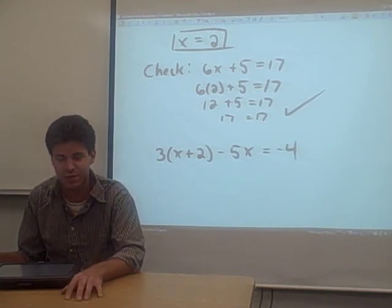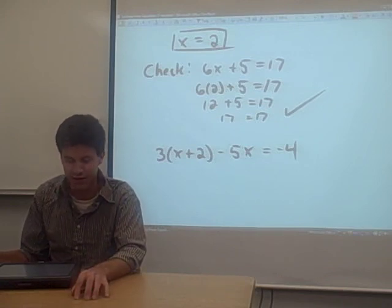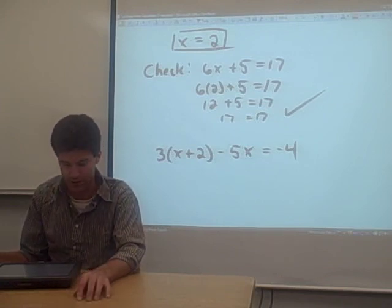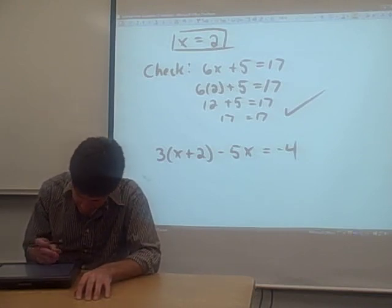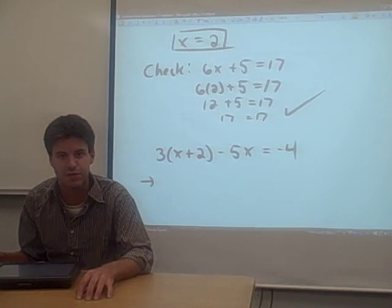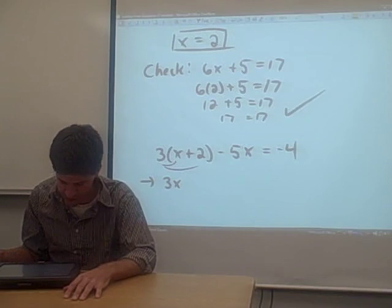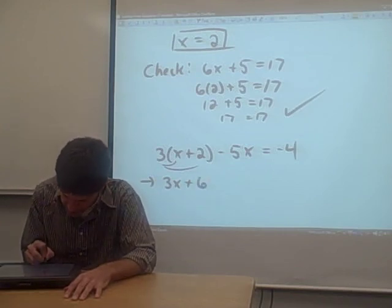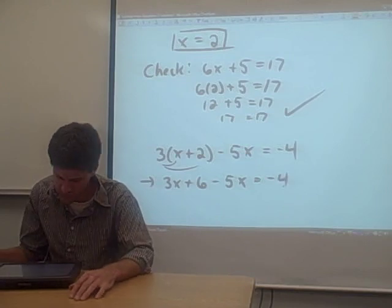The basic steps are still going to be the same. We have to add something at the beginning. What we have to do first is distribute any parentheses. Distribute through any parentheses. So what we need to do is distribute that 3 through the parentheses. So 3 times x is 3x, 3 times 2 is 6. And copy everything else down the way it is, just like that.